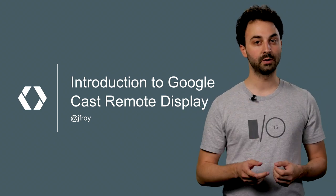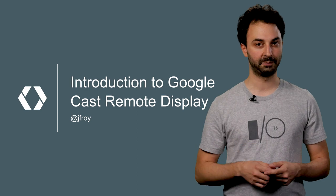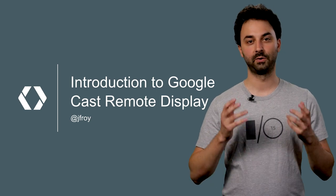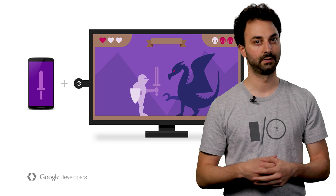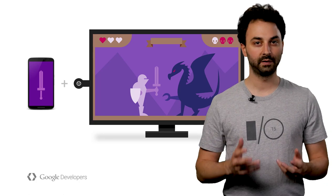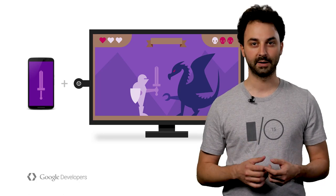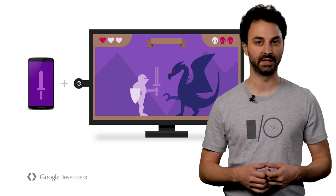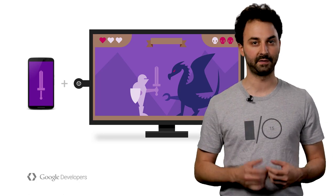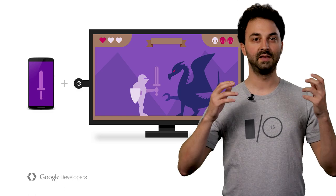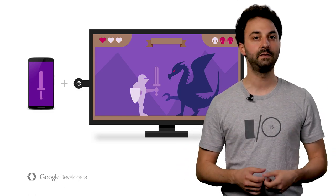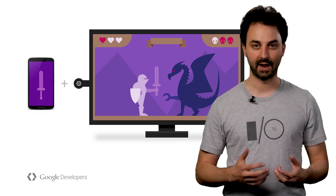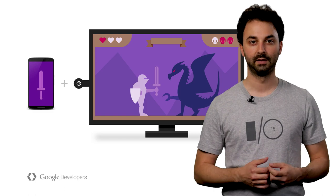With the new Google Cast Remote Display APIs, your app can now render directly to any Cast receiver, like Chromecast. Remote Display is all about combining the amazing rendering capabilities of mobile devices with the immersive power of large TVs to create compelling interactive content.